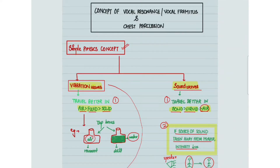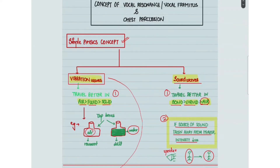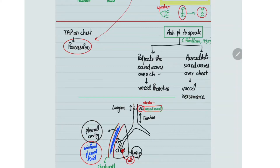For example, if you take two boxes, one full of air and one full of water, and tap them from outside, the box with air will produce a good resonant note, whereas the box with water will produce a dull note. Another concept is that if the source of sound moves away from the receiver, the intensity heard by the receiver decreases — like a person moving away from a speaker will hear less.